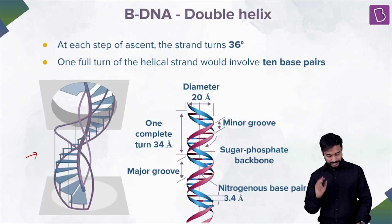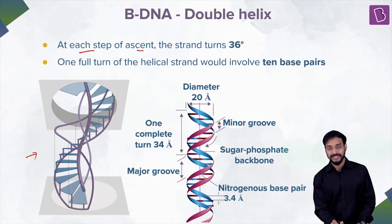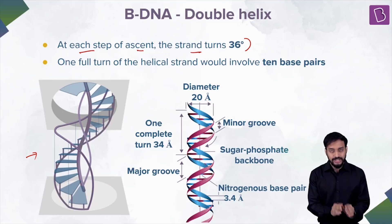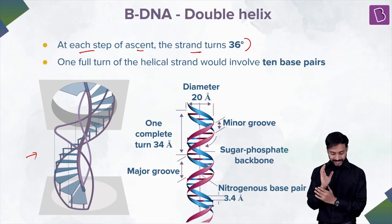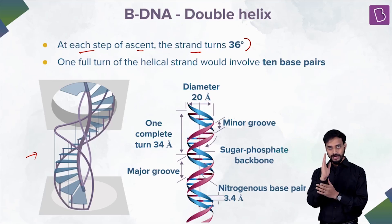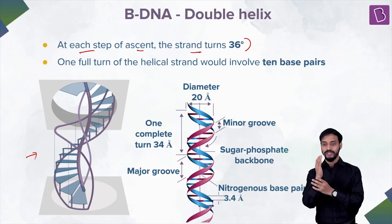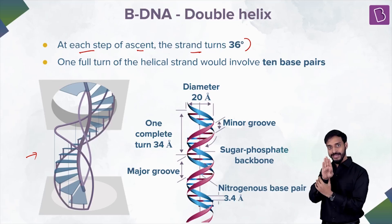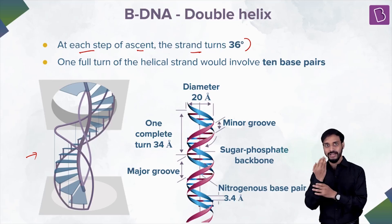At each step of the ascent, the strand turns 36 degrees. B-DNA is the right-handed form — to understand this, curl your right hand, turning from right towards left. That curling motion represents the right-handed double helix. Imagine two strands curling from right to left — that's B-DNA. The strand turns 36 degrees at each step.